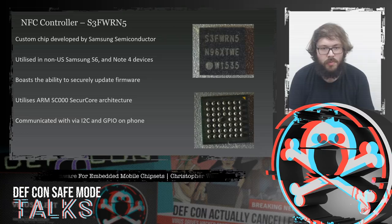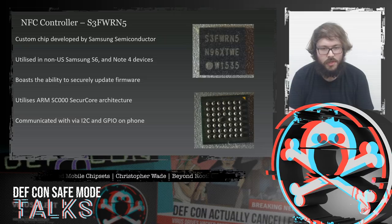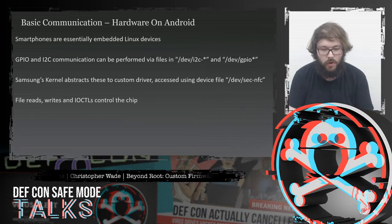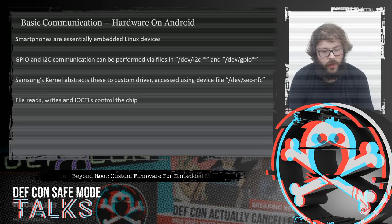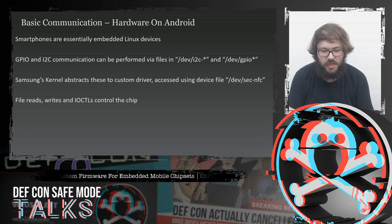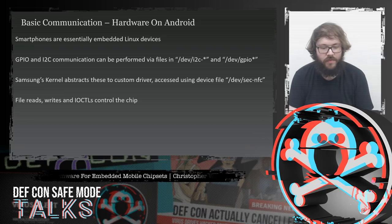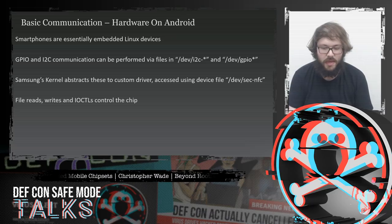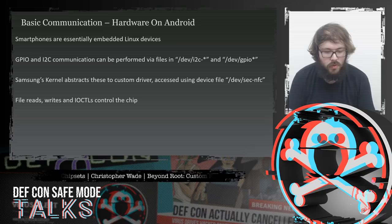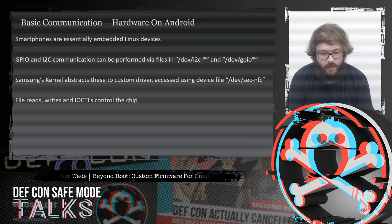This chipset boasted the ability to update firmware securely, meaning people couldn't deploy custom firmware. It utilised an ARM SC000 secure core architecture and was communicated with via I2C and GPIO on the phone. The Samsung kernel abstracted these into a custom driver accessible via the device file /dev/sec_nfc. It used IO controls to power the chip on and off, and file reads and writes to communicate over I2C.